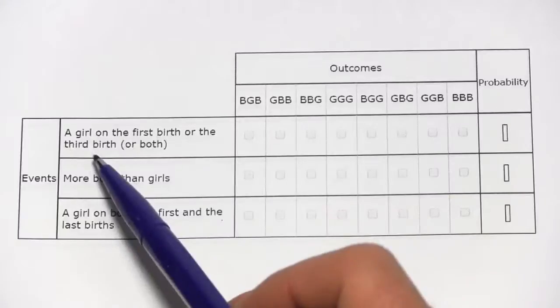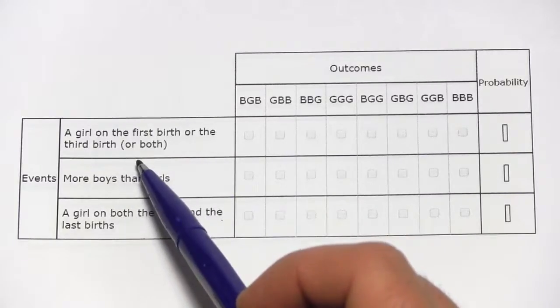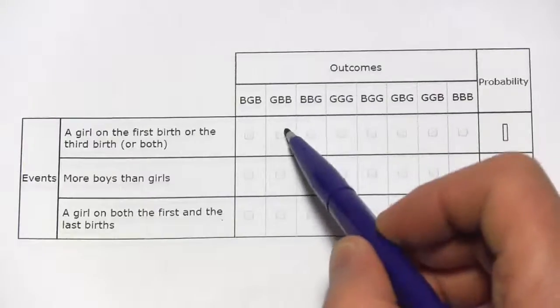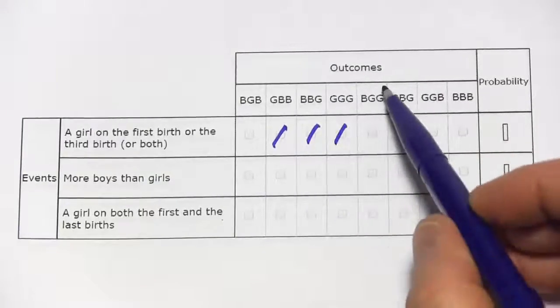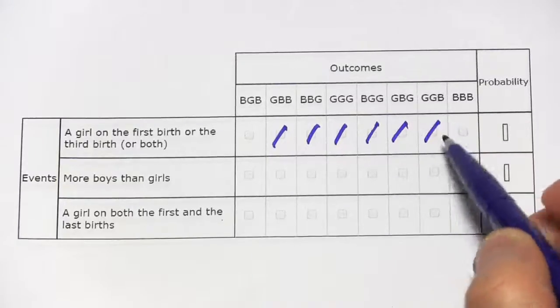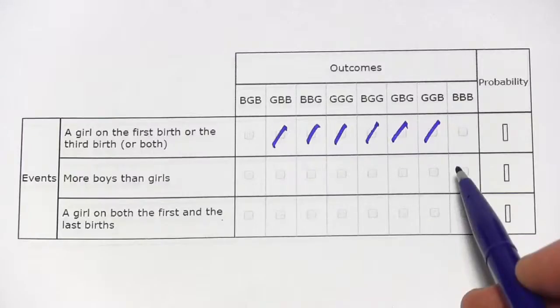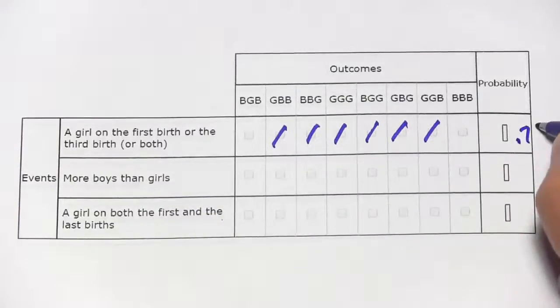Now, let's look at these events. The first one says a girl on the first birth or the third birth or both. So first or third or both. [Checking each outcome.] So six out of the eight satisfy that. So that's six eighths or three fourths, that's 0.75.